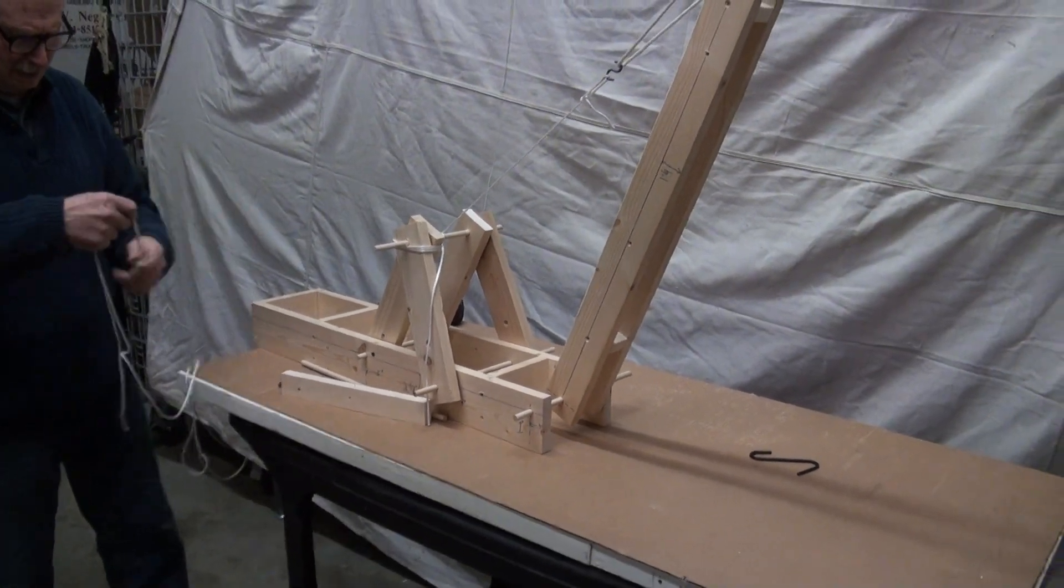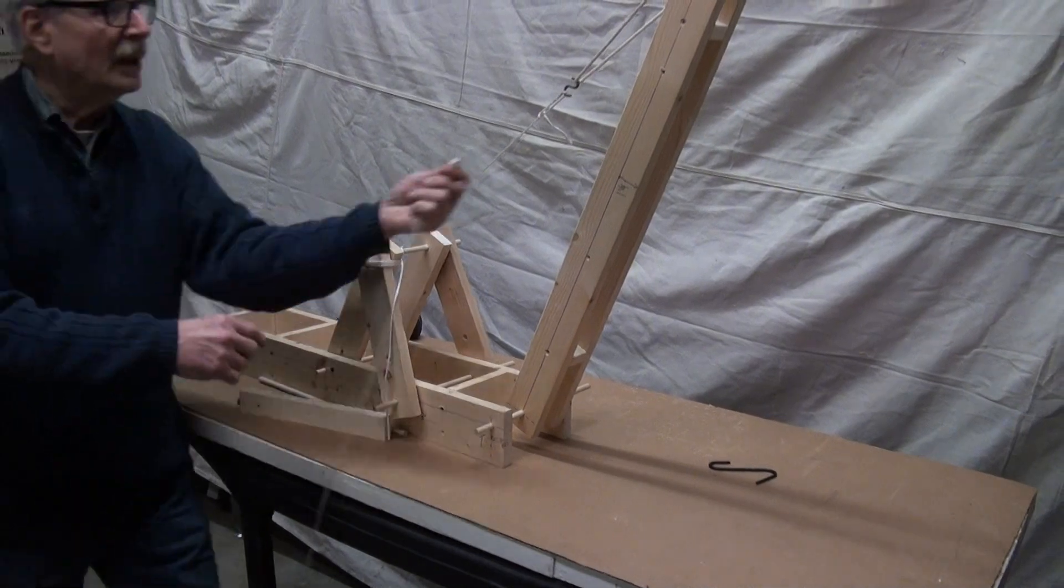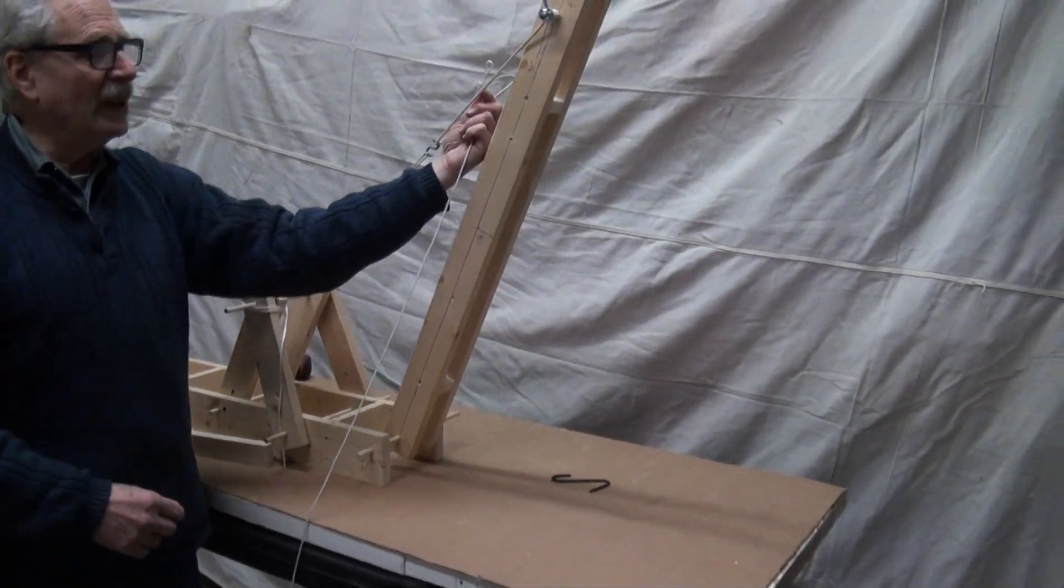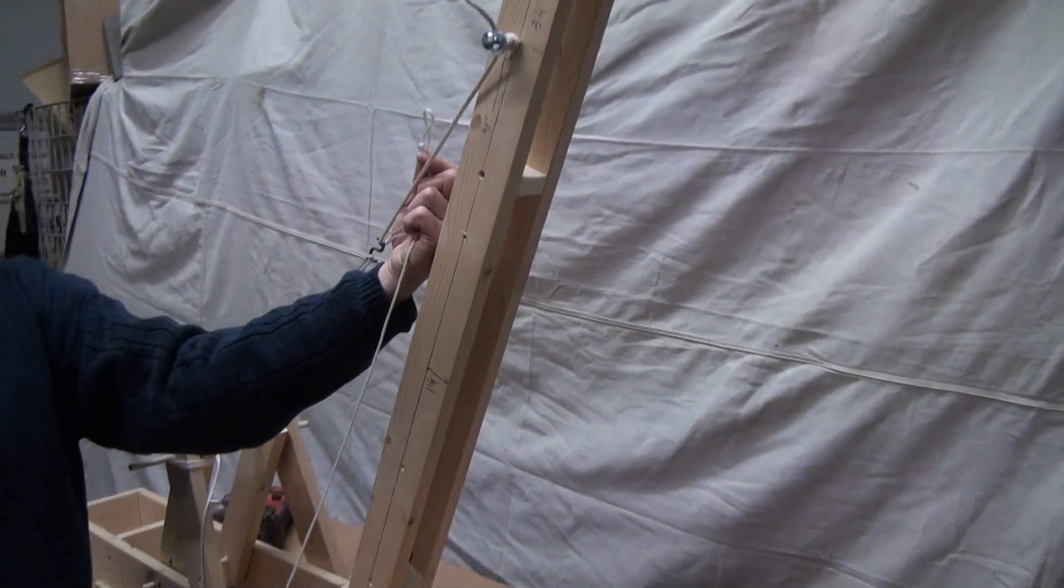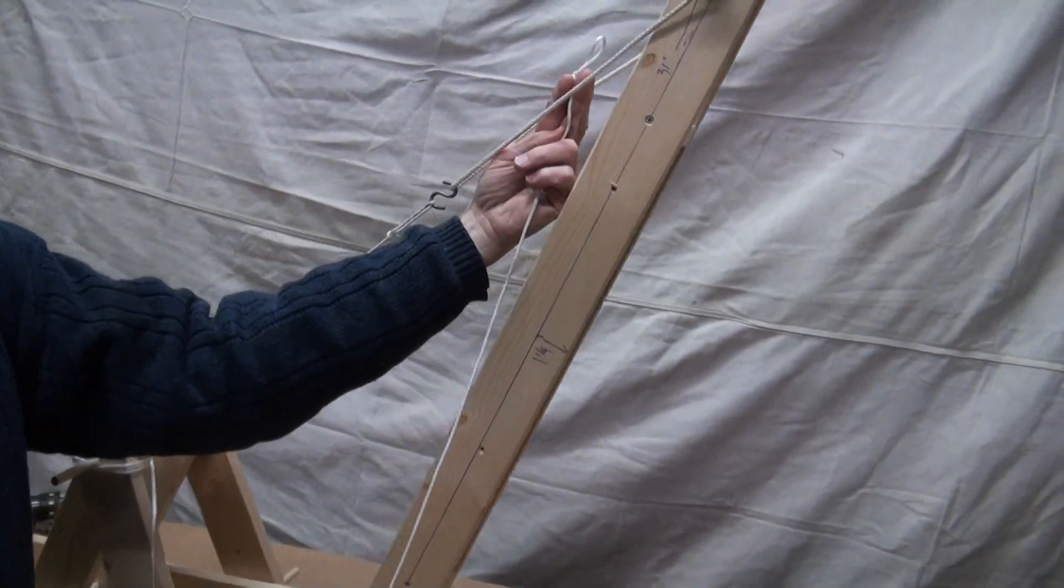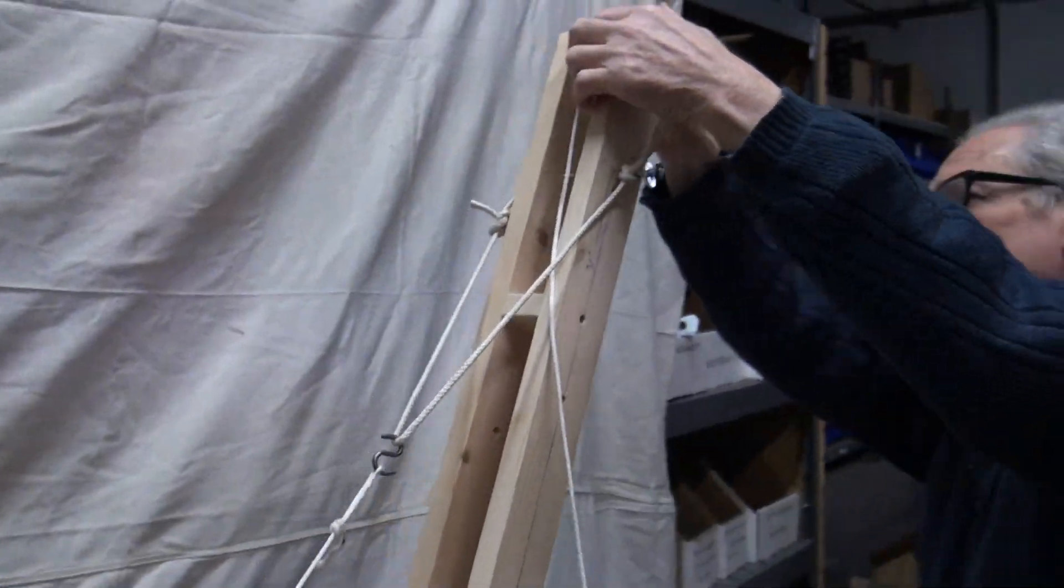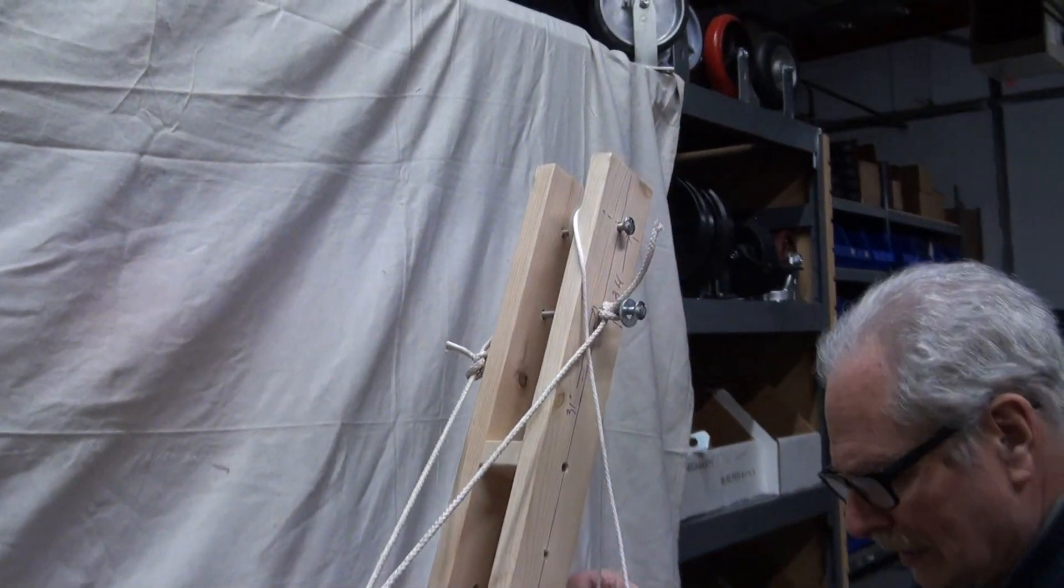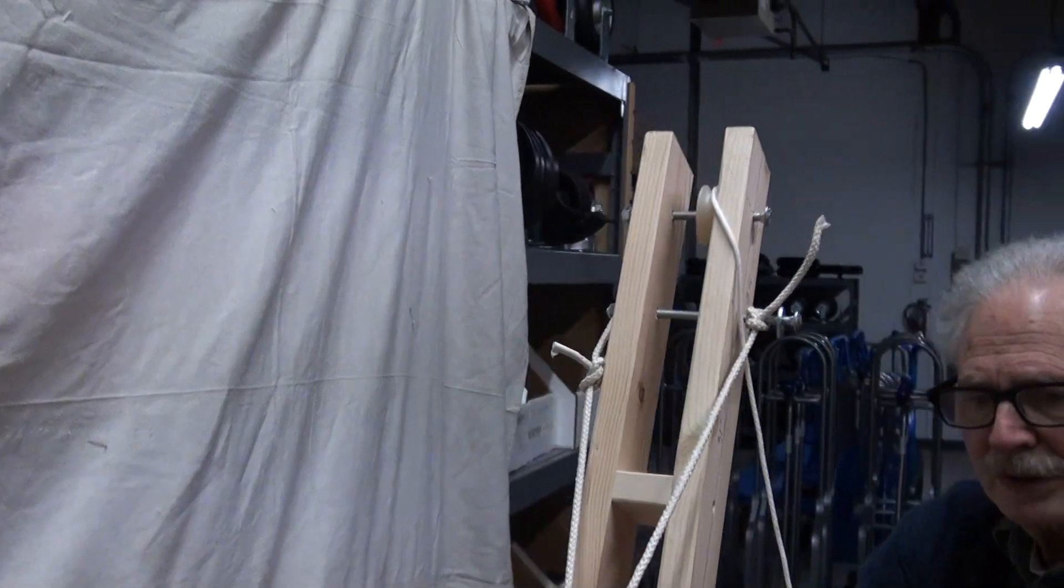The load line passes underneath the sling here, probably come from this side. So underneath the sling, then on top of the pulley wheel. There's the hook, right?